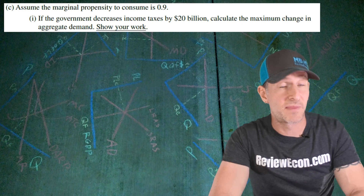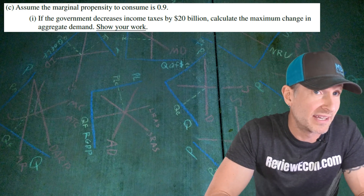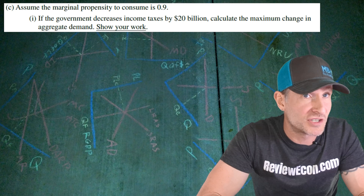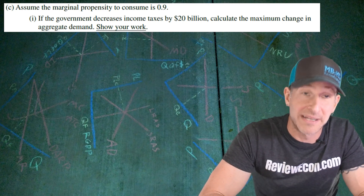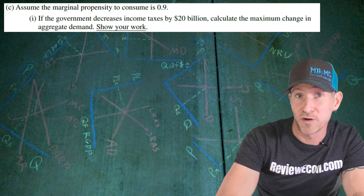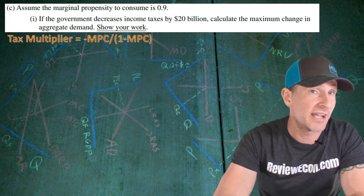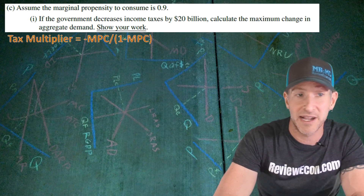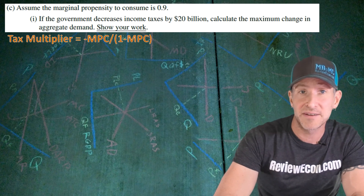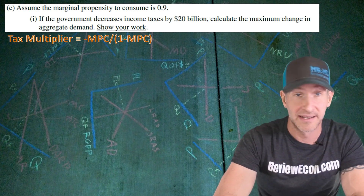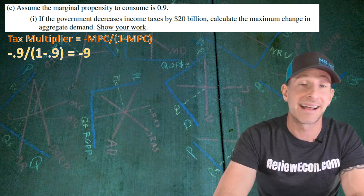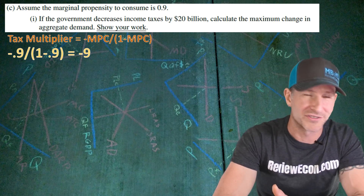For part C, we're going to assume that the marginal propensity to consume within Northland is 0.9, and we are asked to calculate the maximum change in aggregate demand if the government decreases income taxes by $20 billion. We have to show our work. We have to remember that the tax multiplier is the negative MPC divided by 1 minus the MPC. That gives us a tax multiplier of negative 9. If you calculated it as 9 instead of negative 9, that's also going to be okay.